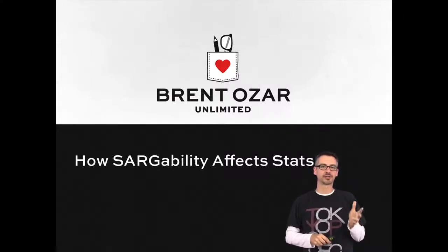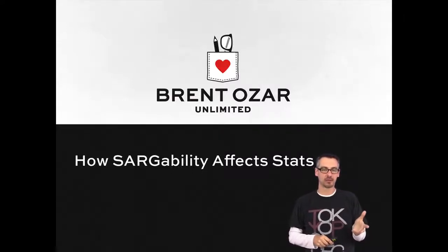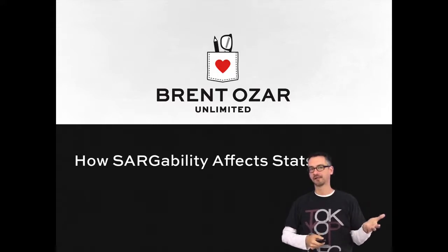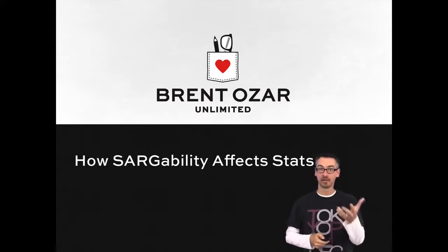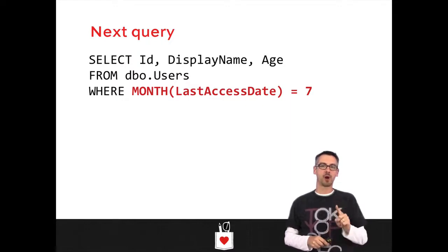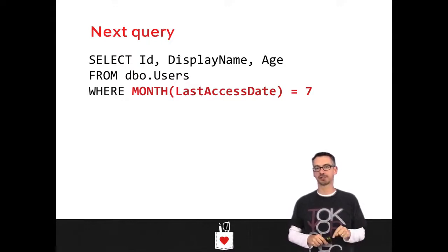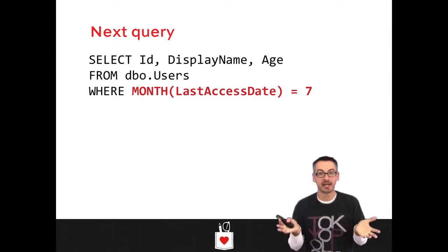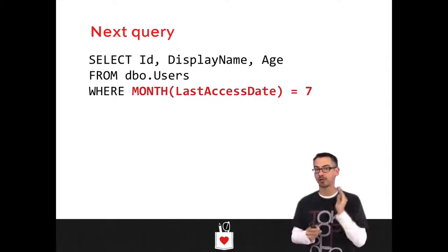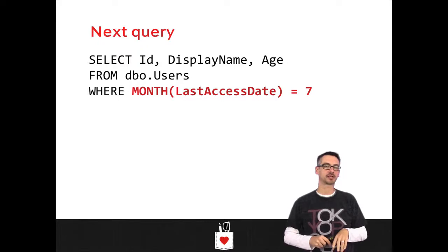In this module we're going to talk about Sargeability, one of those words that sounds kind of made up like 'compressive' or 'performant.' It really does have real meaning for database people. Your next query: where month of last access date equals 7 — any July. I don't care what year it is, I just want to know all the people who last accessed the system in July.